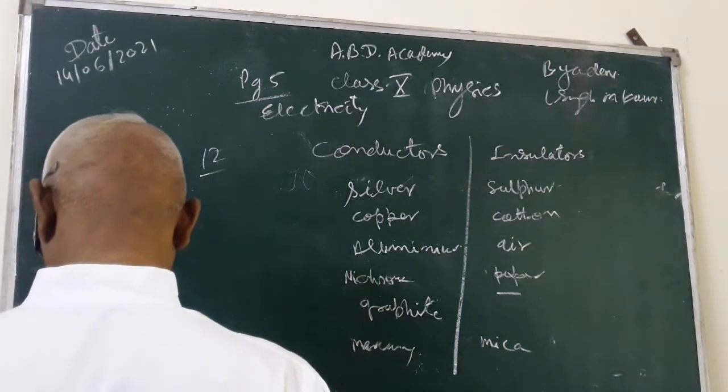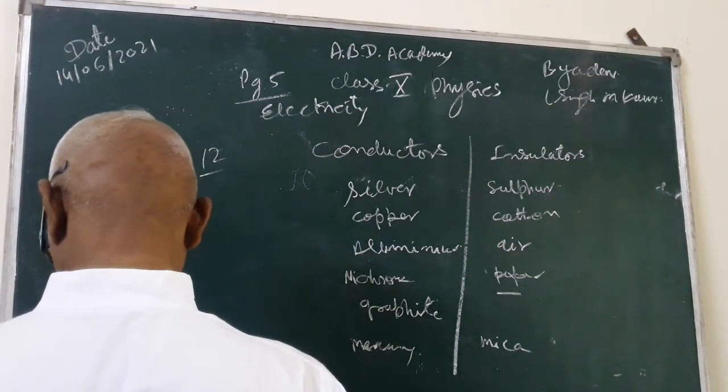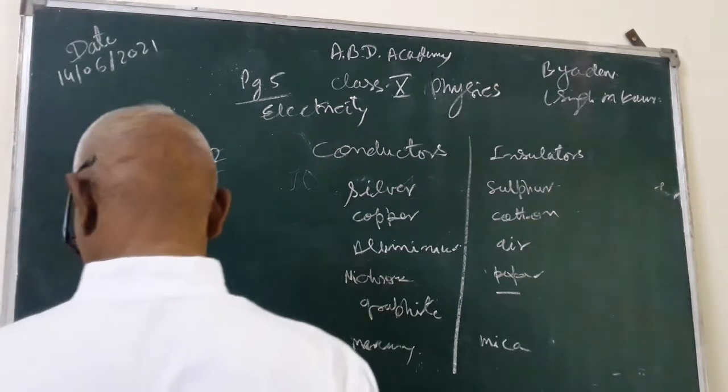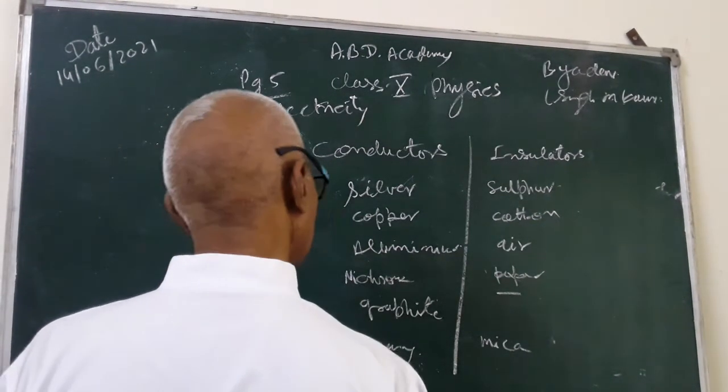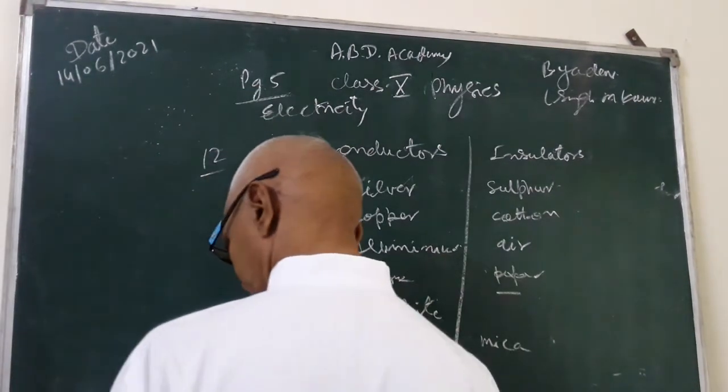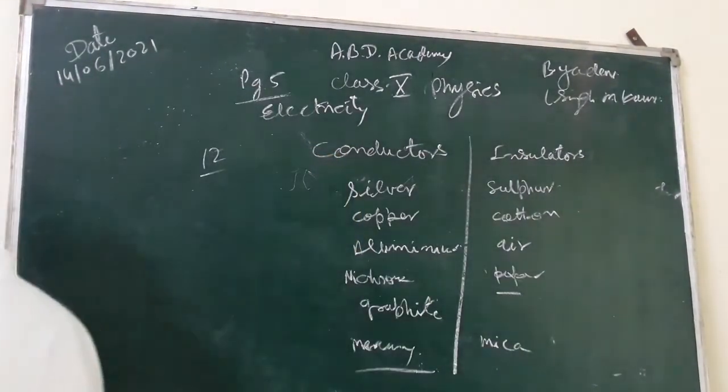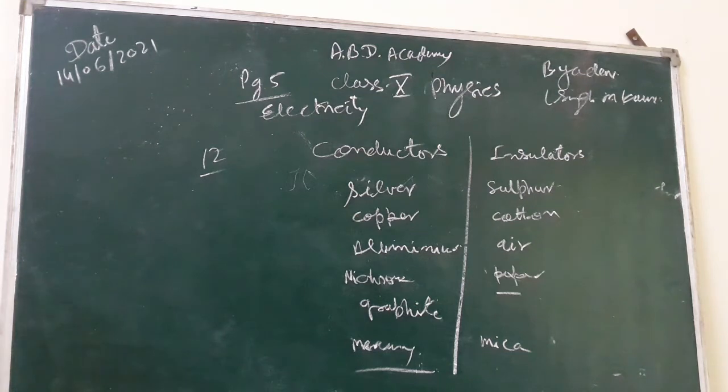Manganine is what? It is an alloy. So, it might be considered a conductor. So, this is list of conductor and insulators in question 12.